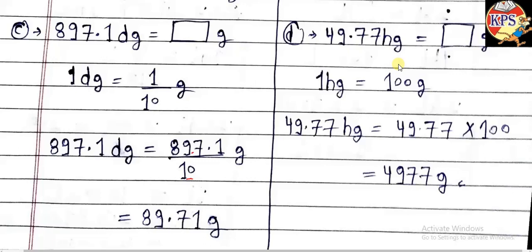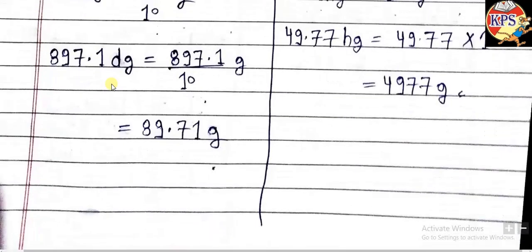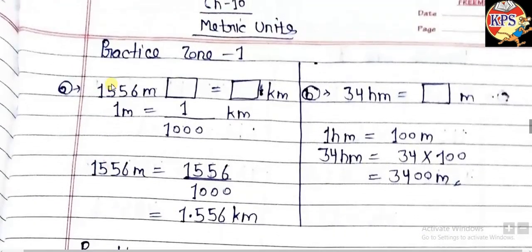Now you have to convert hectograms into grams. 1 hectogram equals 100 grams, so 49.77 hectograms equals 49.77 multiplied by 100. Two zeros means the point shifts two places to the right. Since the point moves past all digits, we don't mention the decimal point, and the answer is 4977 grams. Now do these questions in your copy, and then we'll move on to practice zone three.